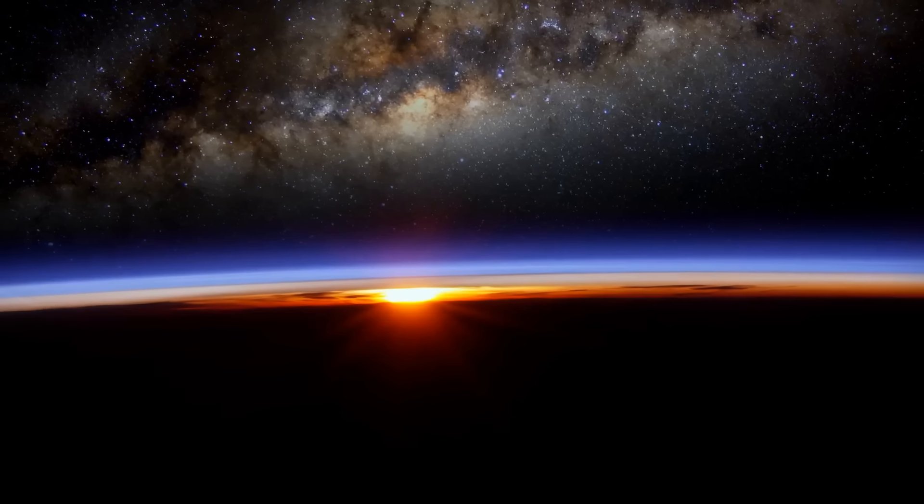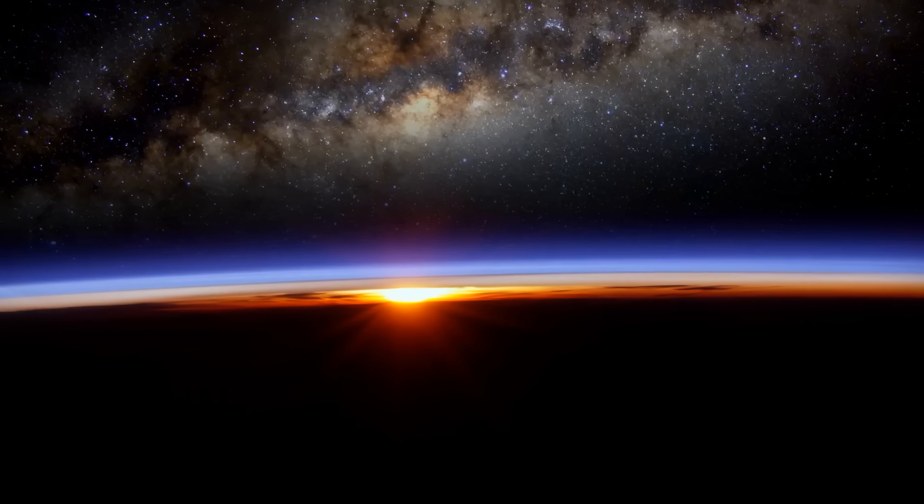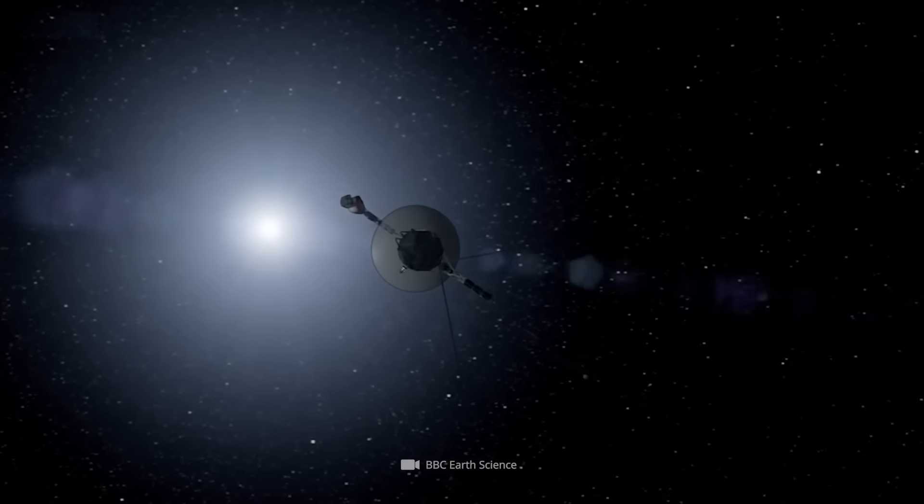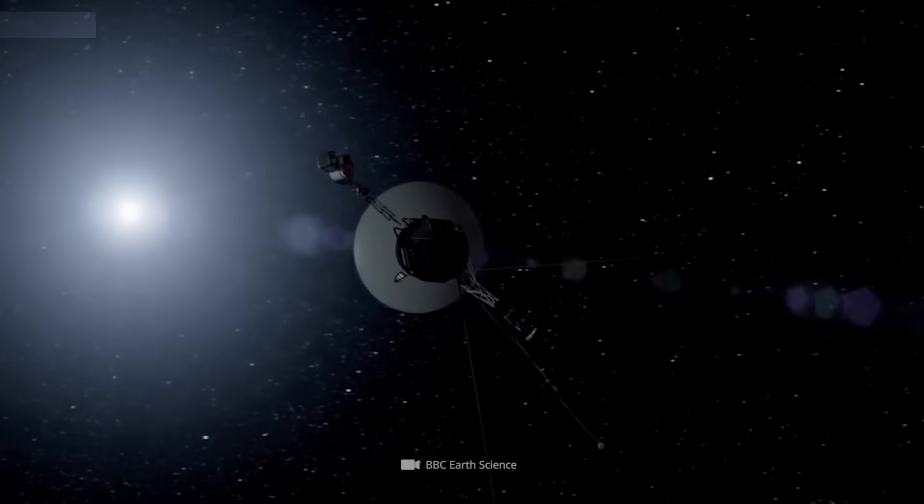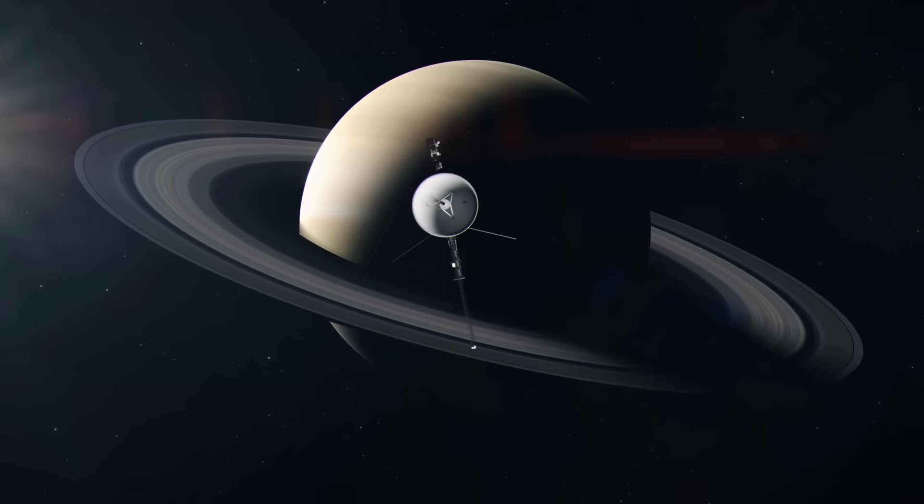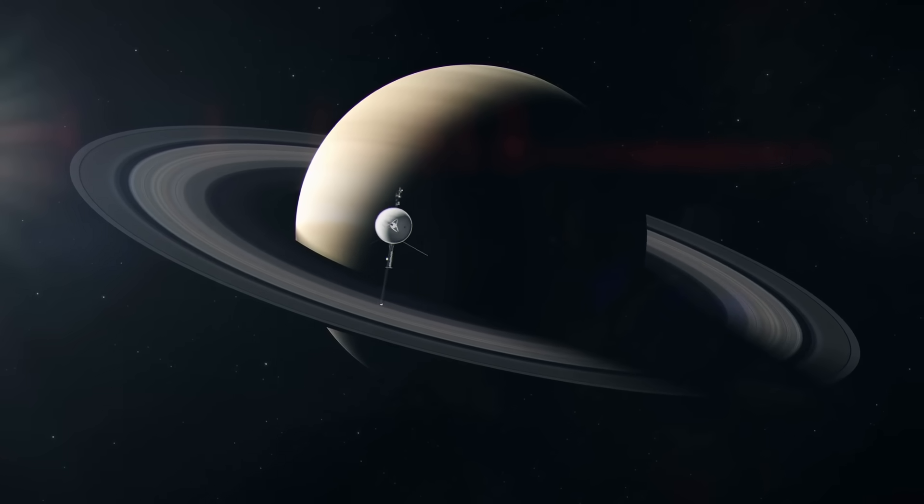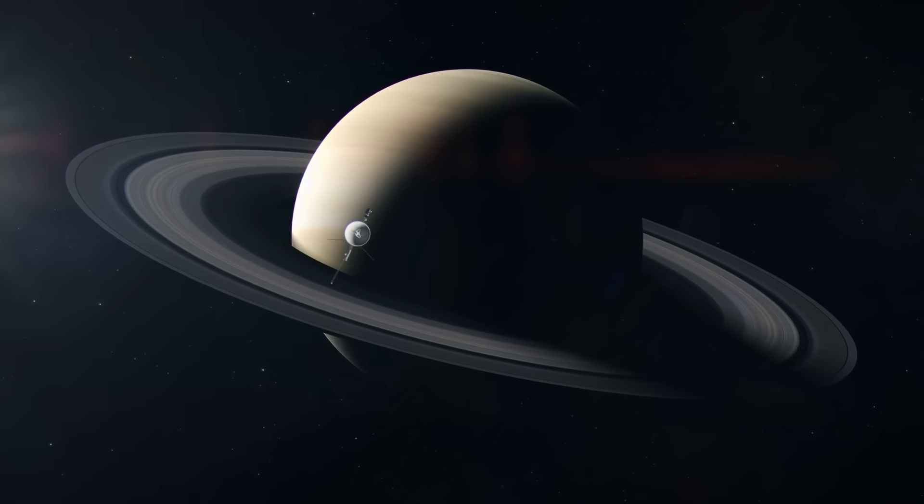In 1977, no one would have thought that these two probes would continue to fly after their primary mission. But realistically, NASA in the 1970s and 80s was already happy that the probes had reached the outer planets at all.